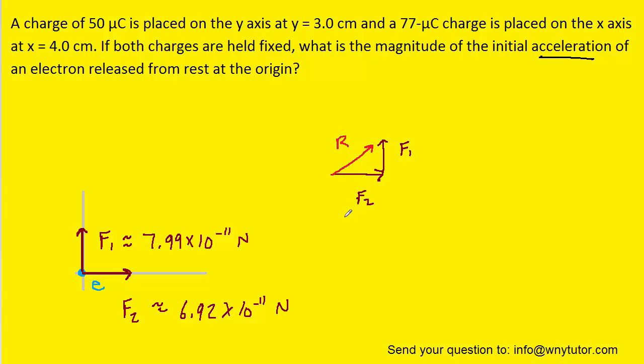When we use the Pythagorean theorem, we'll plug in for f1 and f2 the values we just found. When you do that carefully on your calculator, you should get a resultant force of approximately 1.06 times 10 to the minus 10 newtons. That's the resultant force acting on the electron.